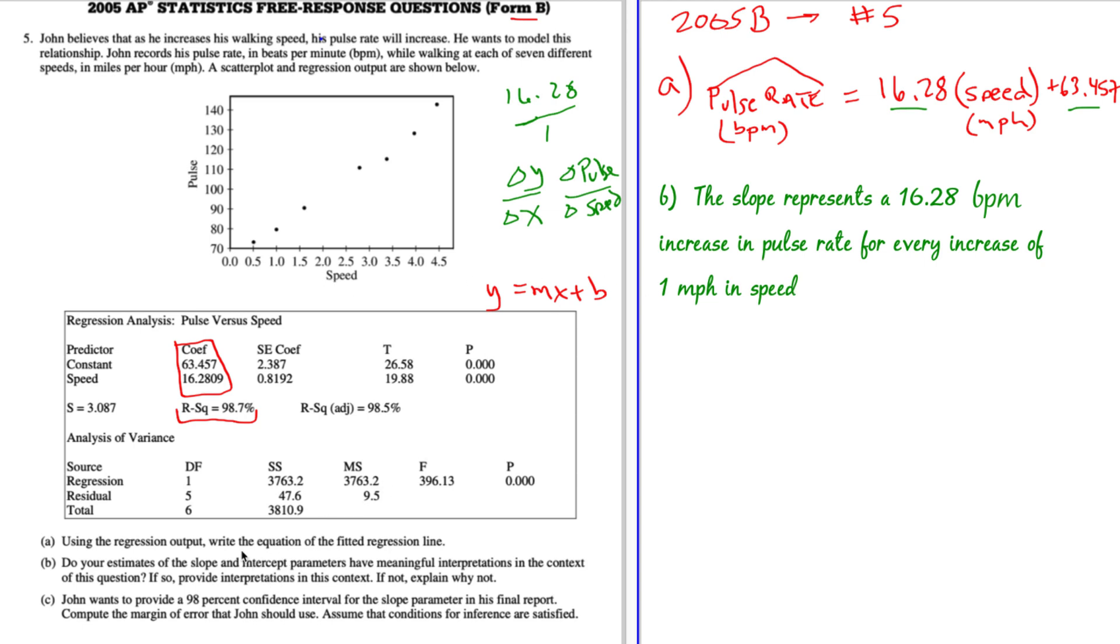All right, that's easy enough. Now, what about the other one? Because it said slope and intercept. So the intercept, okay, what does that number represent? That number is 63.457. Okay, that is what happens when this term goes away. Or in other words, the speed is zero, right? So a speed of zero would result in a pulse rate of 63.457. So let's write that out.